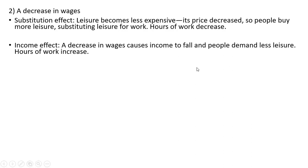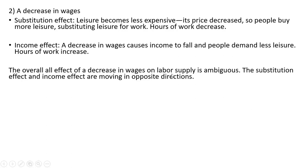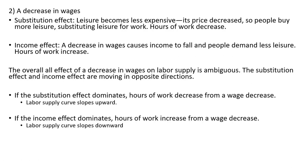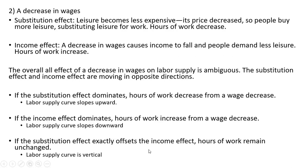If you're taking less leisure, you're working more. The overall effect of a decrease in wages on labor supply is once again unclear and ambiguous — the substitution effect and income effect are moving in opposite directions. If the substitution effect dominates, hours of work decrease and the labor supply curve slopes upwards. If the income effect dominates, hours of work increase from a wage decrease and the labor supply curve slopes downwards — a backward-bending, negatively sloped labor supply curve. If the substitution effect exactly offsets the income effect, hours of work remain unchanged and the labor supply curve is vertical.